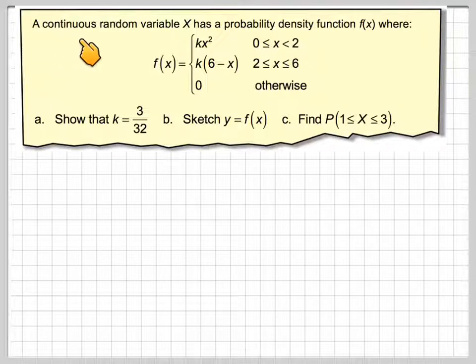So it says a continuous random variable X has a probability density function f(x) where f(x) is kx² between 0 and 2, and k(6-x) between 2 and 6, and otherwise it's 0.